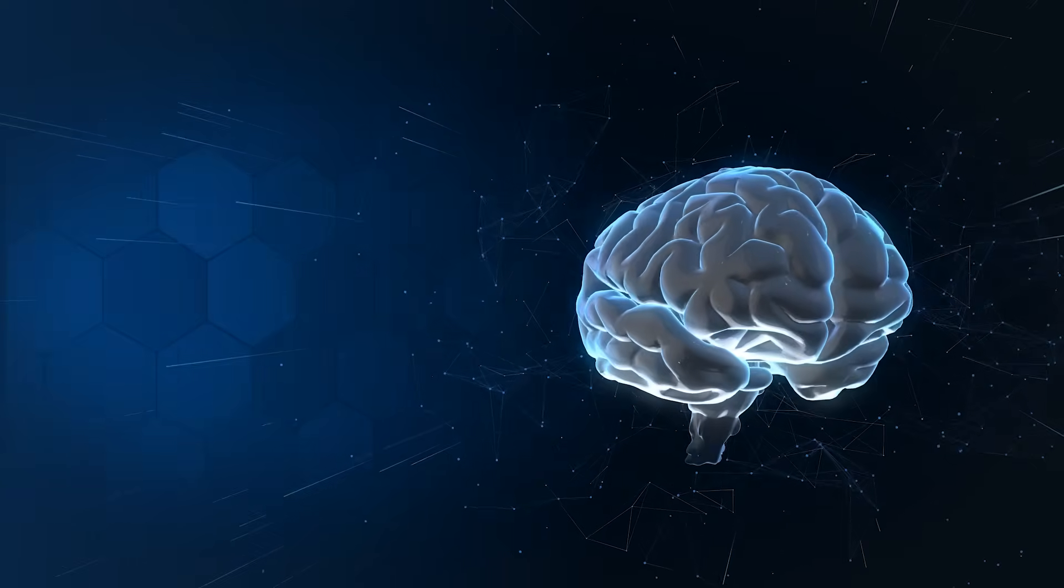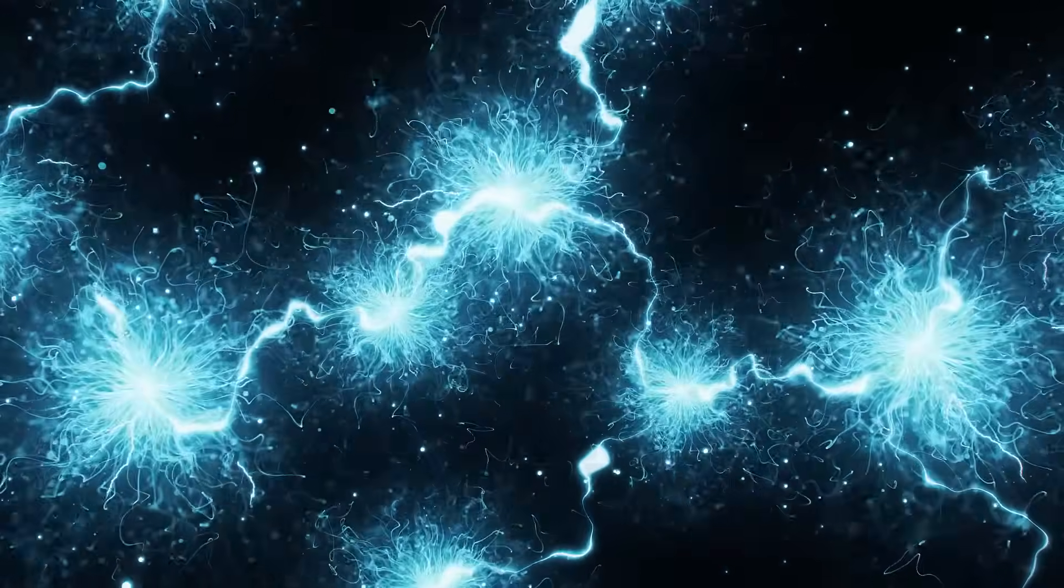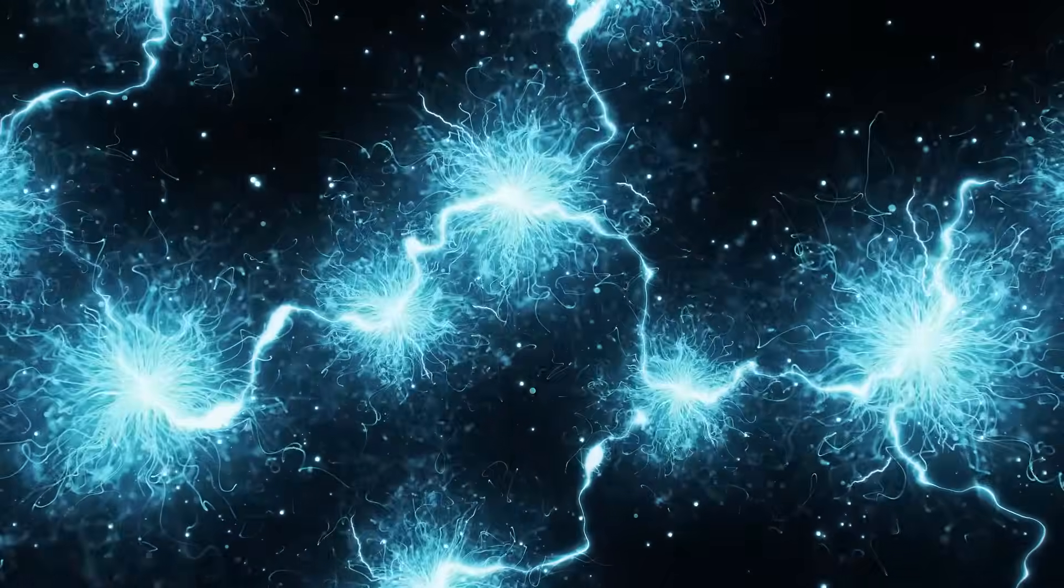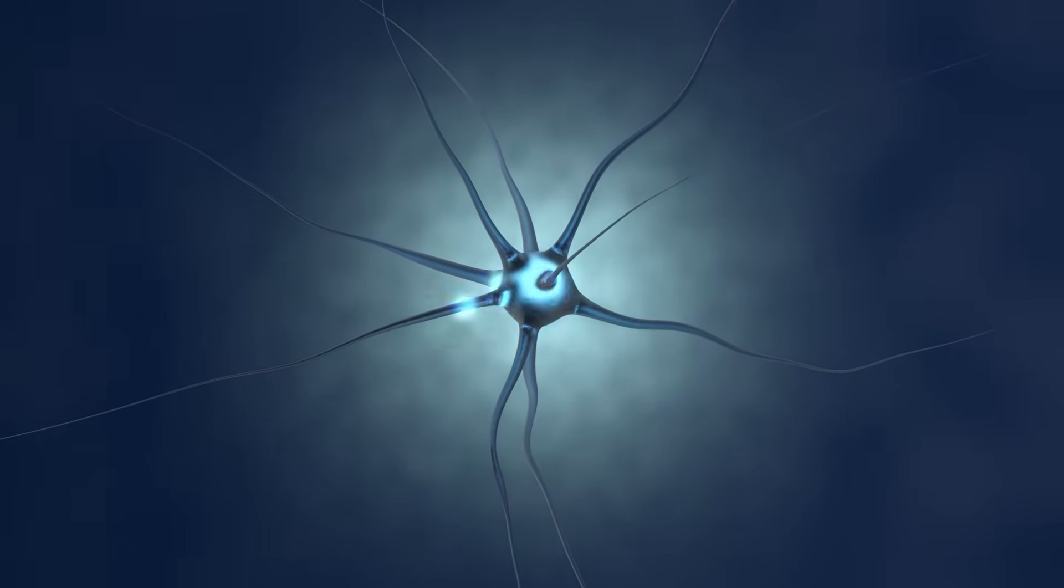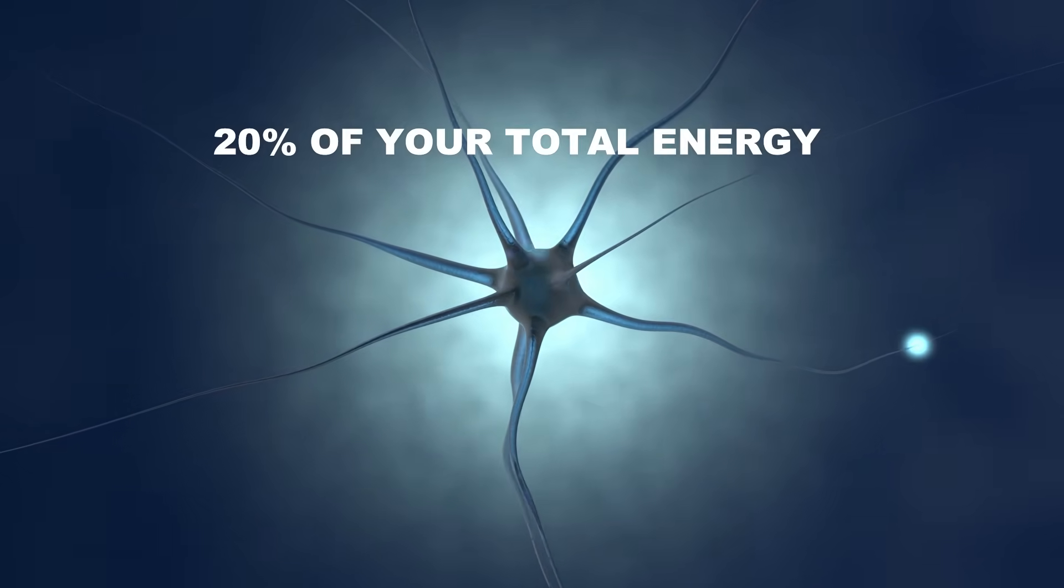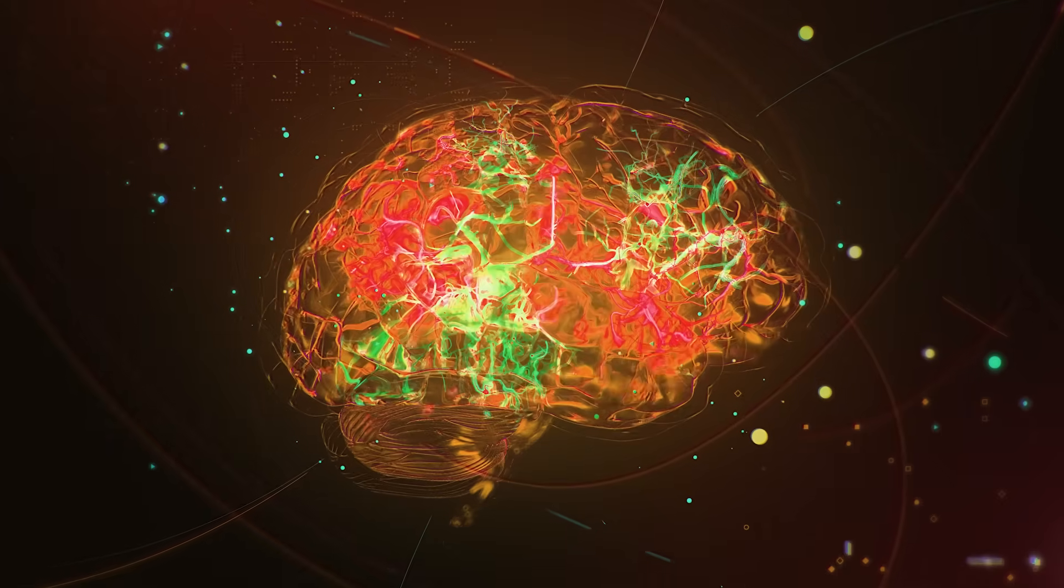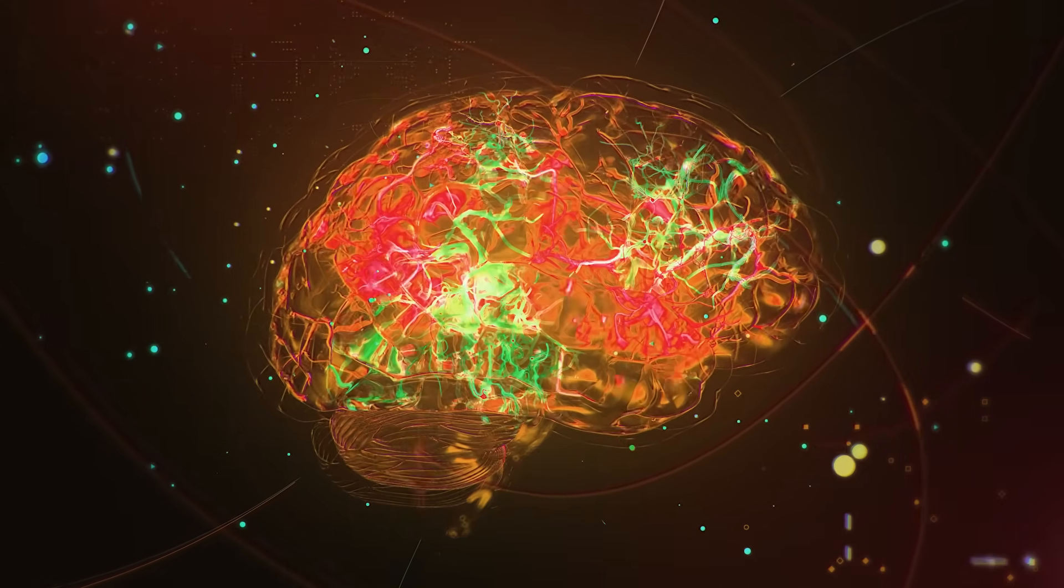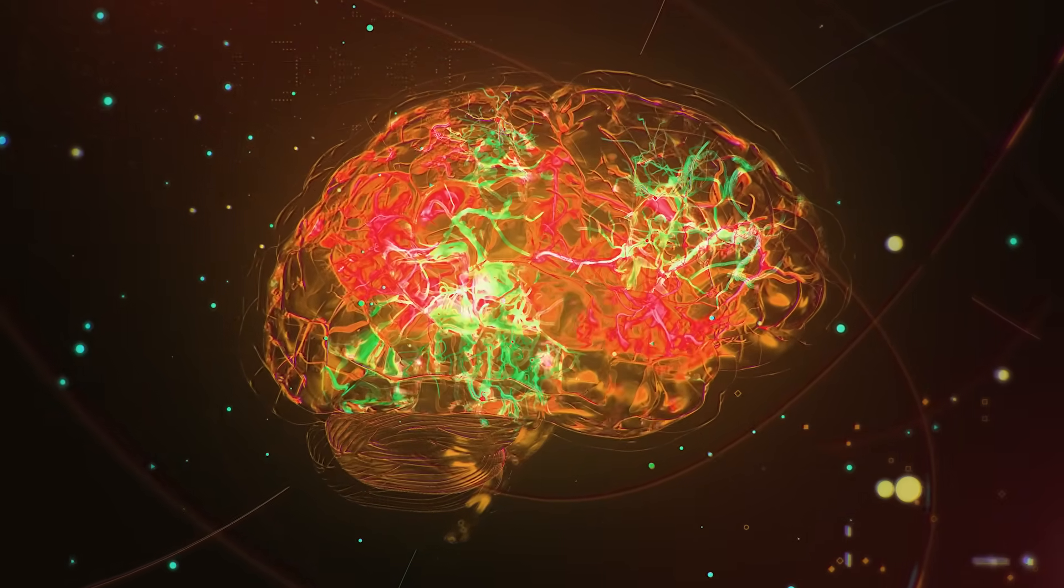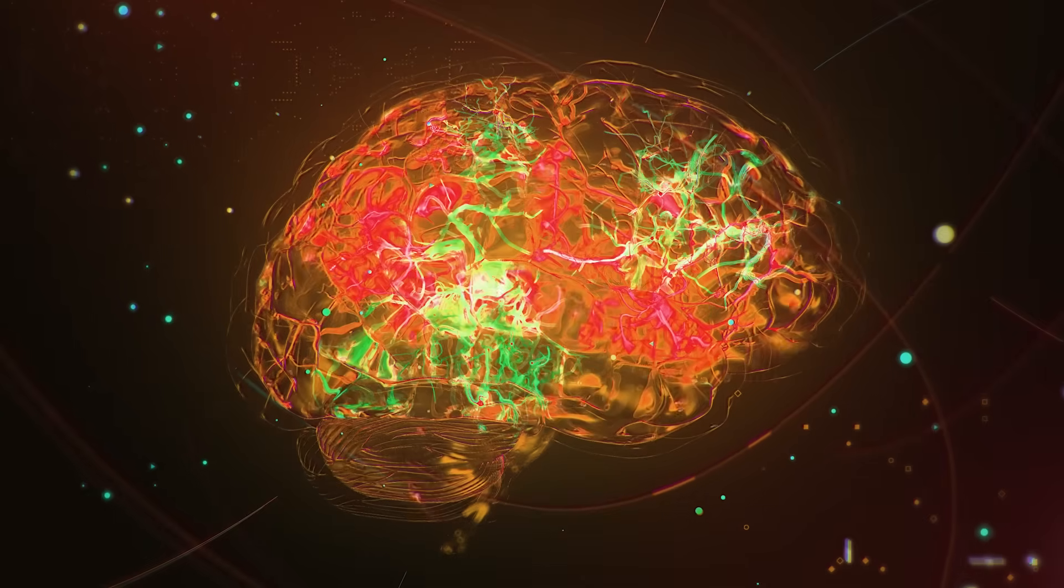This connection between metabolism and light production explains why certain tissues shine brighter than others. Your brain, for instance, is an absolute beacon of biological light. Neural tissue produces some of the highest UPE ratings in the human body, and it makes perfect sense when you consider that your brain consumes about 20% of your total energy, despite being only 2% of your body weight. Those neurons are constantly firing, communicating, and maintaining complex networks, all of which requires tremendous metabolic energy and produces correspondingly intense light emissions.